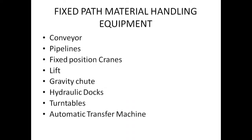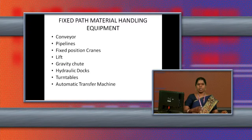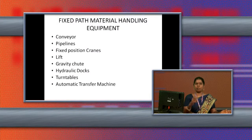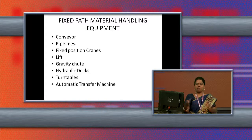Now let us see fixed path material handling equipment. The first example is the conveyor — we all know conveyor belts. Raw materials in an organization move from one manufacturing process to another on a conveyor belt. The conveyor belt is a mechanical equipment that moves continuously without stopping. We can see conveyors in cement manufacturing, where raw materials are carried from one workstation to another.